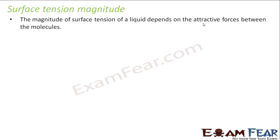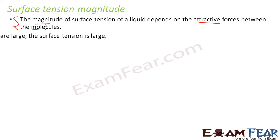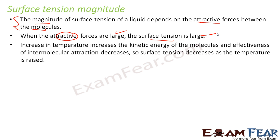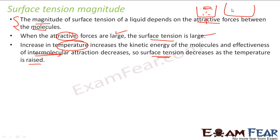The magnitude of surface tension depends on the attractive force between the molecules. If the attractive force is more, the surface tension is large. If we increase the kinetic energy of the system, the intermolecular force of attraction will decrease, and thus the surface tension will decrease as the temperature is raised. You can do this experiment at home: put some water in a vessel, put a pin on it — it will float. Heat it up, and after some time the pin will come down.